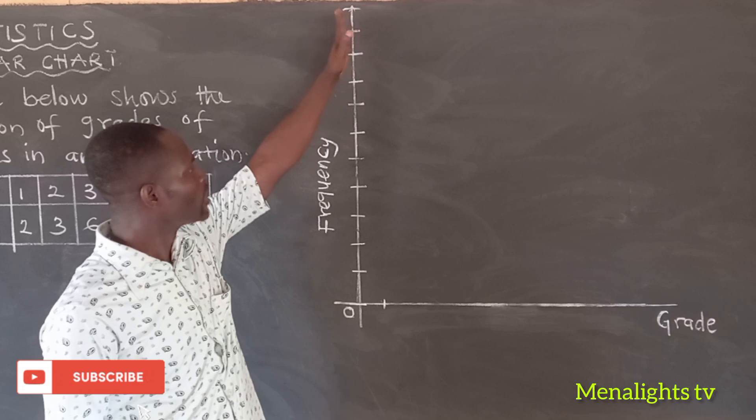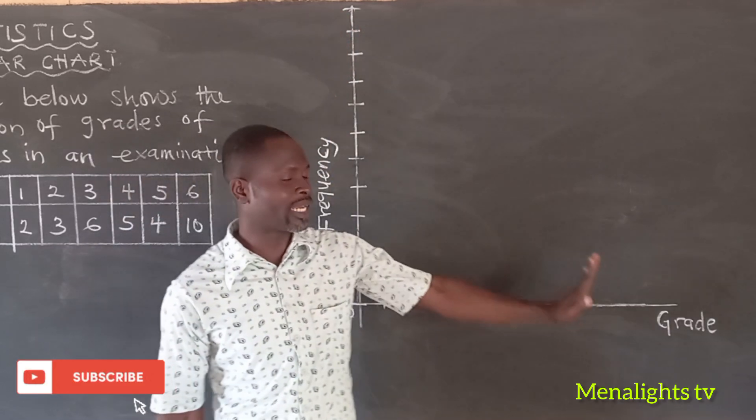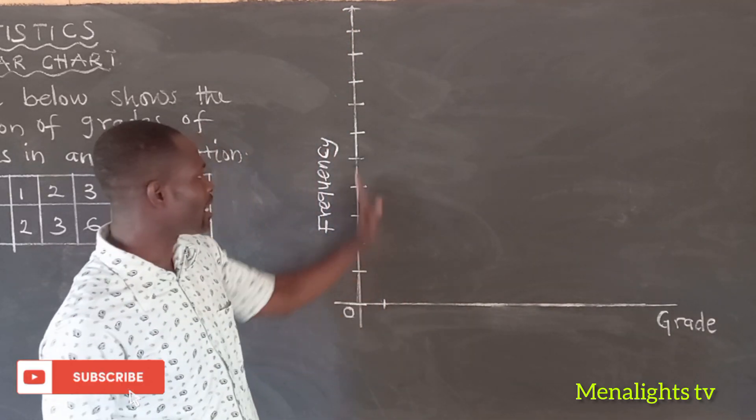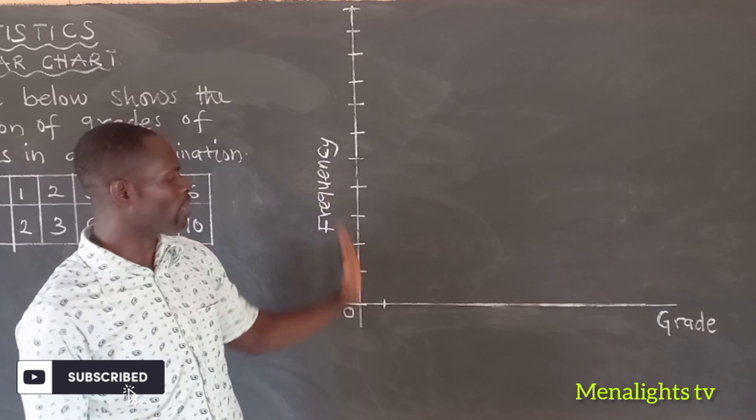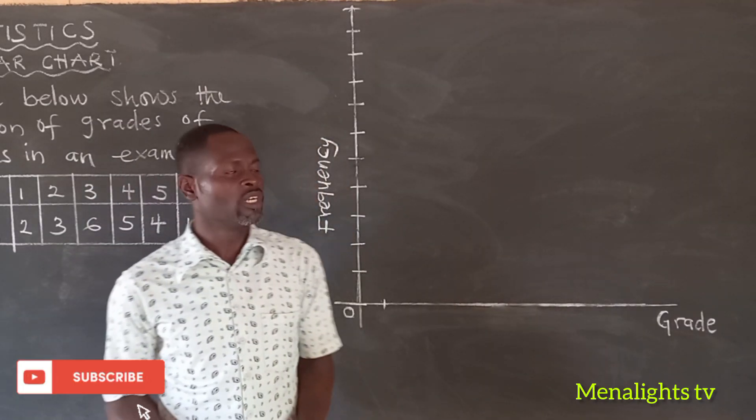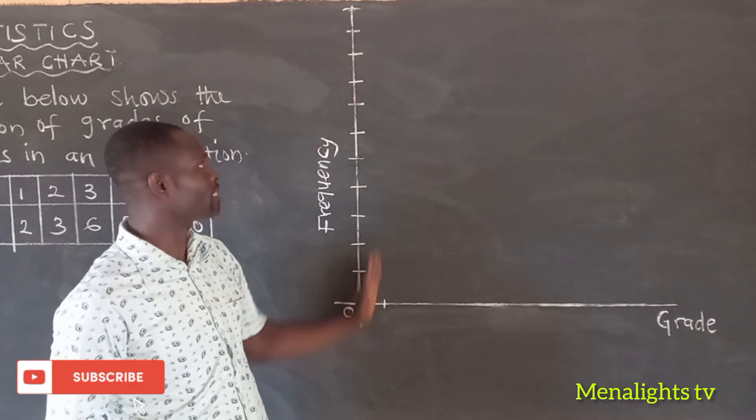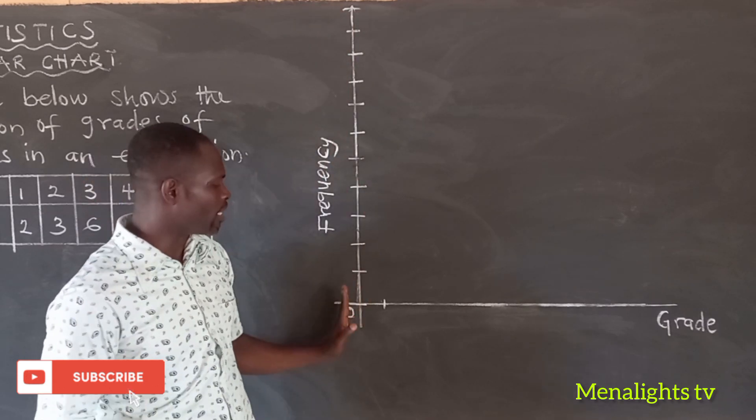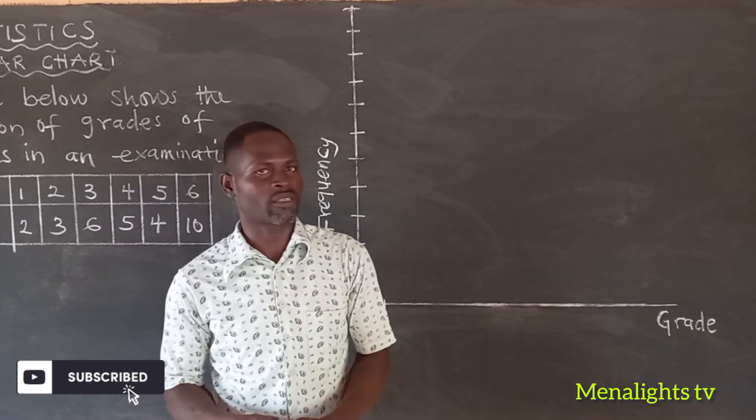So I have my vertical line and then the horizontal line here. The vertical axis here is the frequency and the horizontal is the grade. The vertical axis is the Y axis and the horizontal is the X axis.